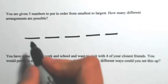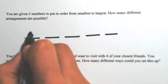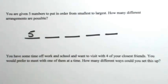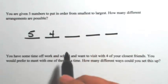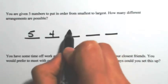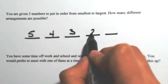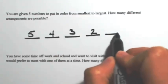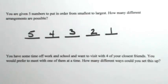For the first number we have five possible choices. Since we have to put all the numbers in some order, we can't reuse a number. So the next number only has four possibilities, then three, then two, then one. All of these events are dependent — once you choose a number, you can't choose the same one again, so it affects the next choice.